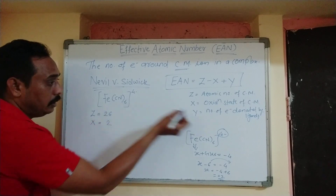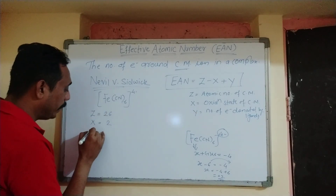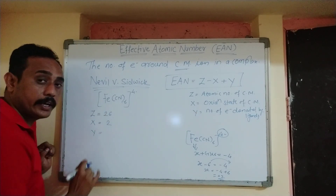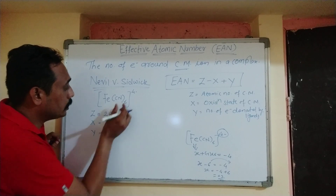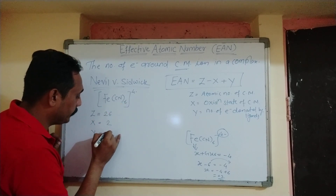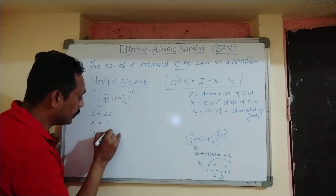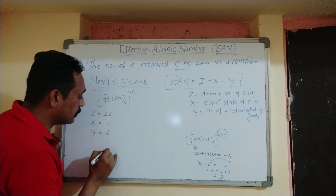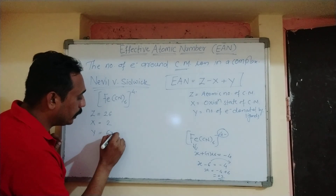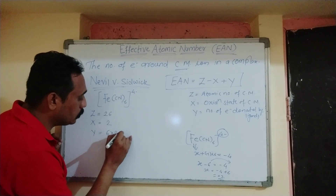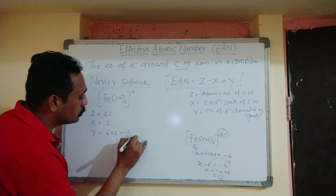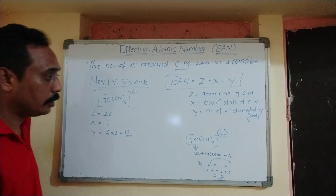Now, what is Y? Y is the number of electrons donated by the ligands. How many ligands are there? 6 ligands. Each ligand donates 2 electrons, so 6 into 2, which is equal to 12. So Y is equal to 12.